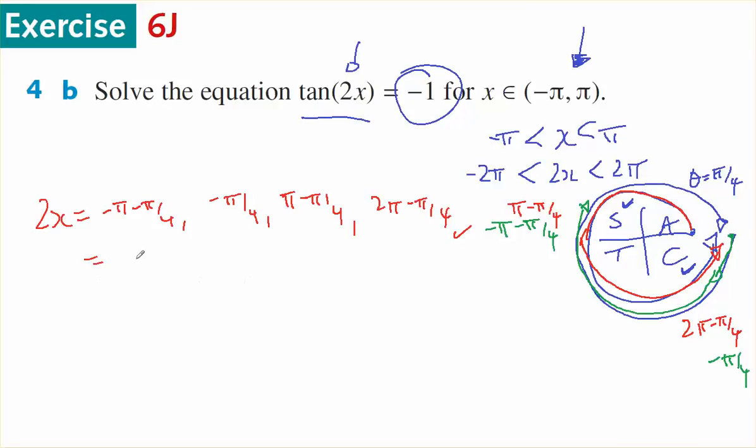So 2x equals -5π/4, -π/4, 3π/4, and 7π/4.